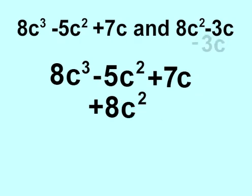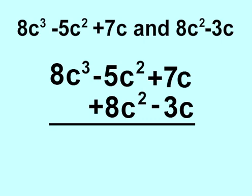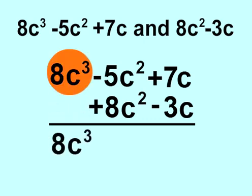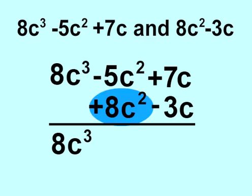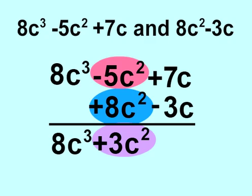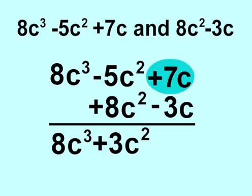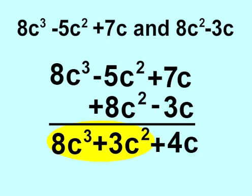Now, we have a negative 3c to bring down. Let's solve the problem. 8c cubed stays the same. 8c squared minus 5c squared equals 3c squared. 7c minus 3c equals 4c. So 8c cubed plus 3c squared plus 4c is our answer.